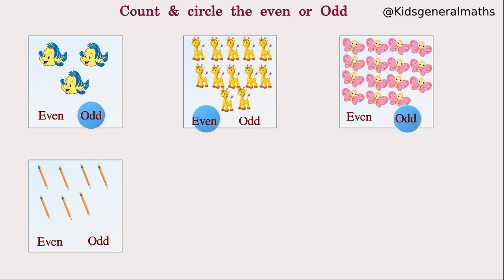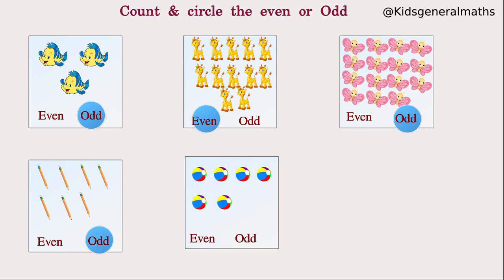Next they give us pencils. We are going to count them: 1, 2, 3, 4, 5, 6, 7. So how many pencils? 7 pencils. Is 7 an even or odd number? 7 is an odd number — we circle 'odd'. Next we count the balls: 1, 2, 3, 4, 5, 6. So 6 is an even number — we circle 'even'.